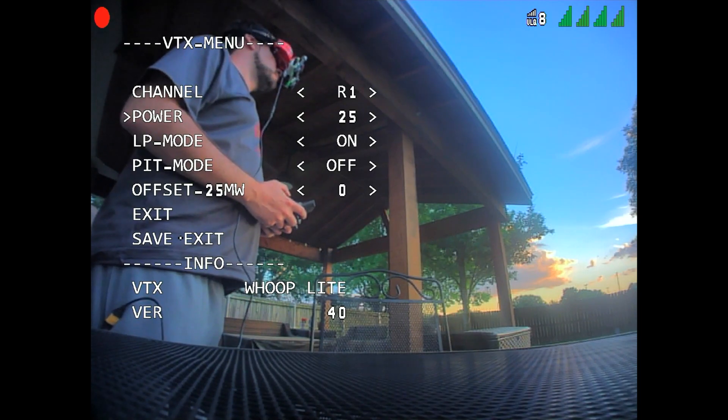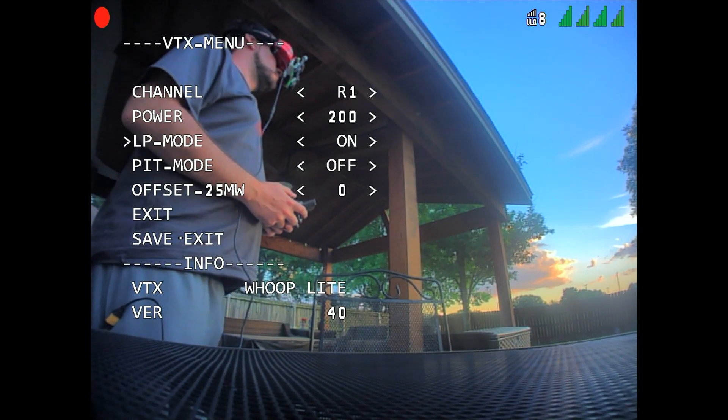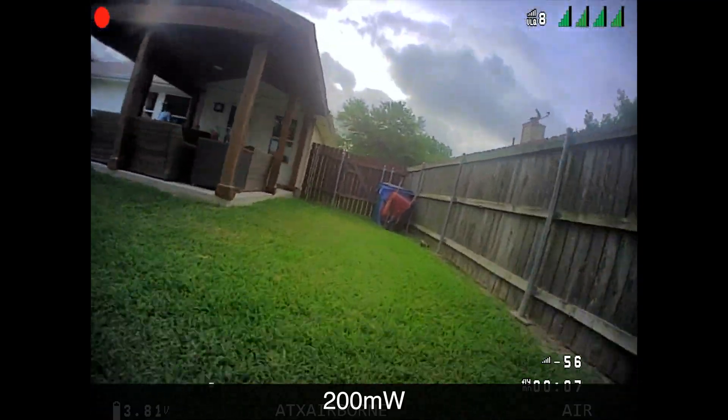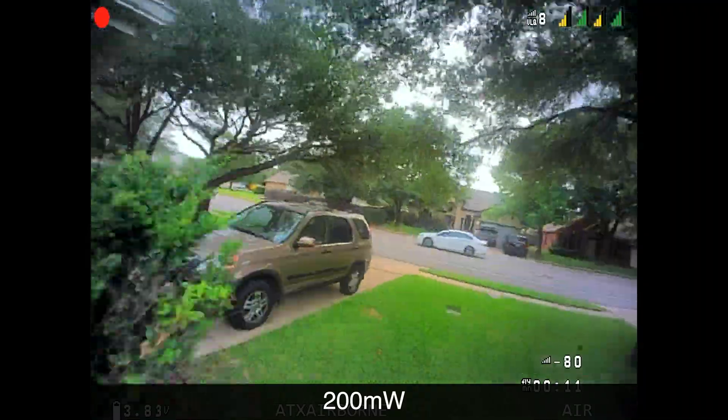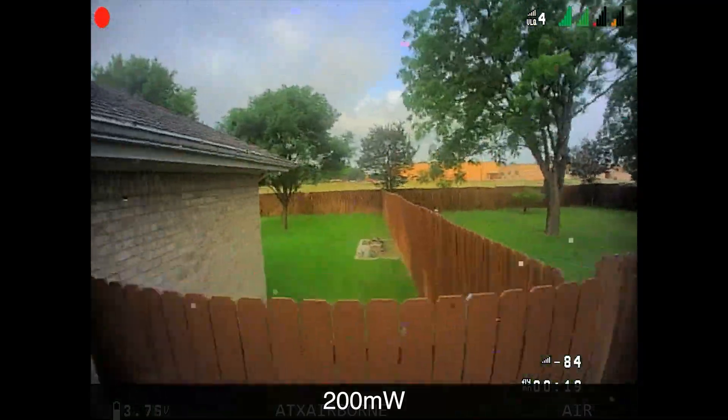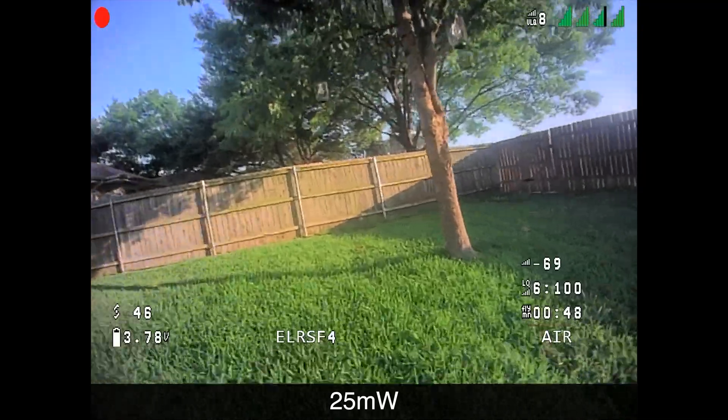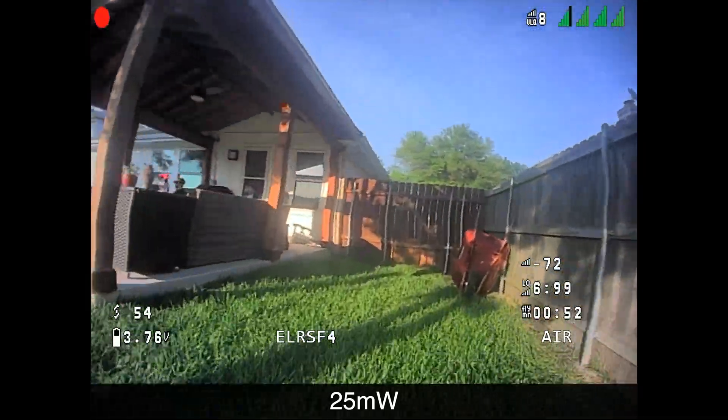It's selectable between 25 and 200 milliwatt power levels just like the previous Whoop VTX and Race VTXs. You will notice a difference in performance between those two levels. 200 milliwatts is the obvious choice for flying at longer distances or around obstacles but I actually found myself selecting that lower 25 milliwatt level for indoor and backyard flying. The performance of HD0 is really good at that lower level and it keeps the VTX from heating up too much.